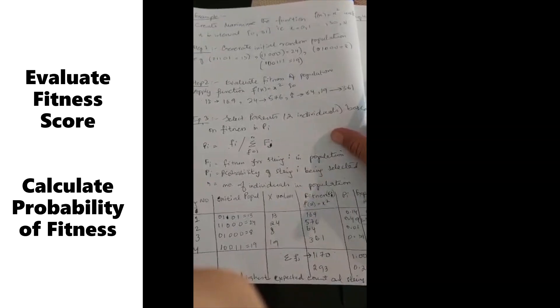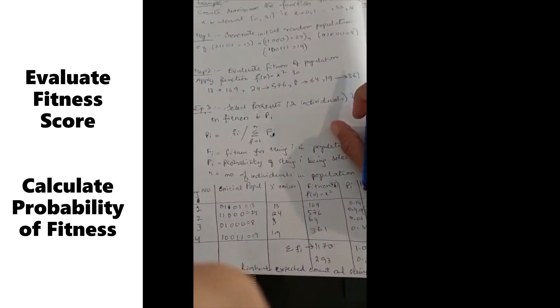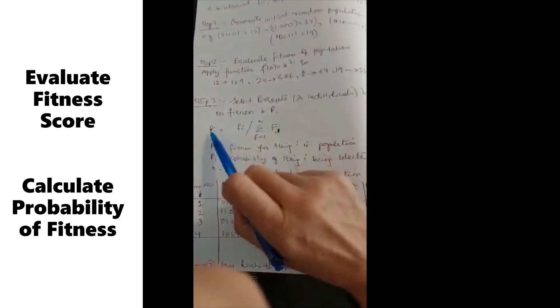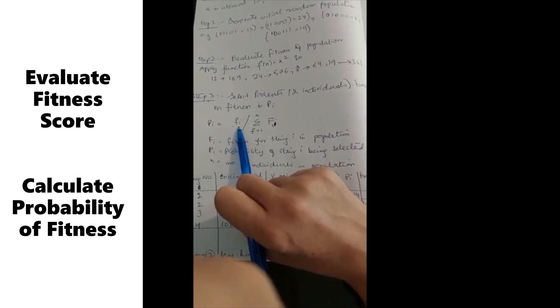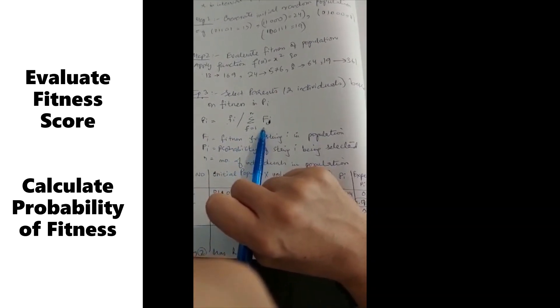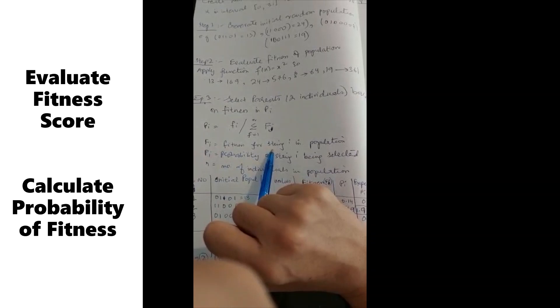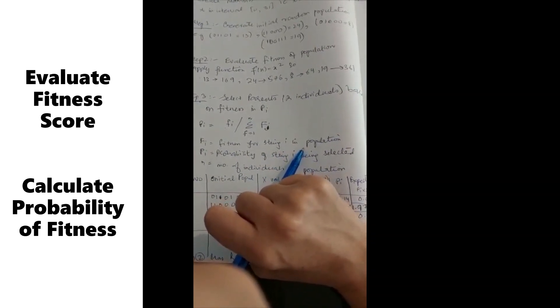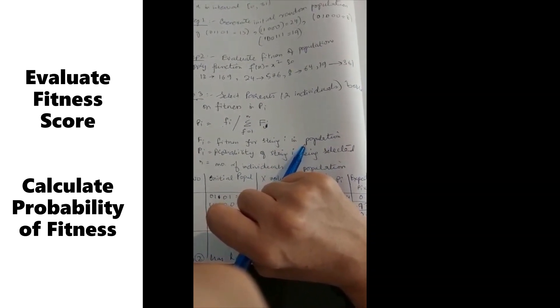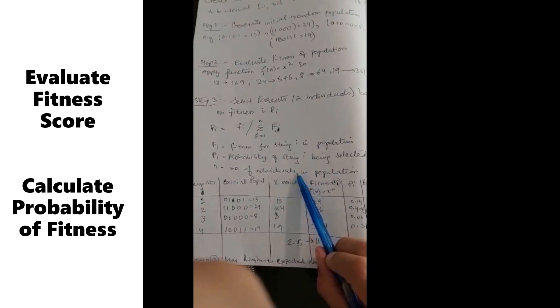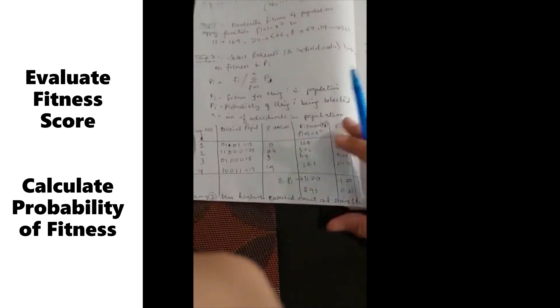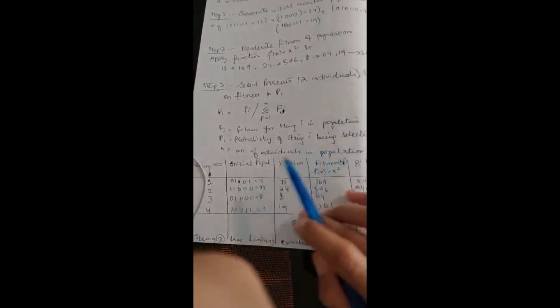We have to select two parents based on probability of fitness. The probability function is probability of i-th individual depends on fitness divided by fitness of all. So Fi is fitness for the string i in population. What is the i-th string fitness? And n is the number of individuals, the number of strings. On the basis of this formula, I have generated this table.